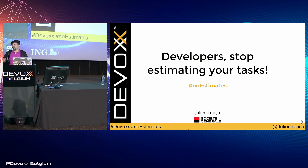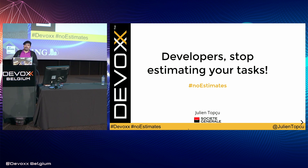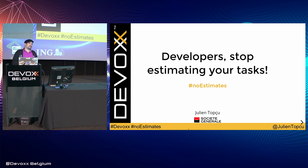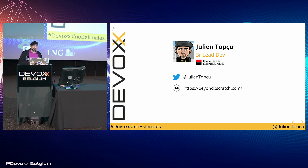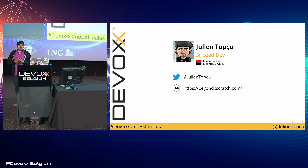Hello everyone. I'm glad to see there's many people in the room. We have only 15 minutes, so I won't be able to explain everything about No Estimates. What we'll see today is how we can adopt No Estimates as a development team. My name is Julien Topsu. I'm a leader at La Société Générale, which is a French bank, and I've been working with No Estimates since 2015.